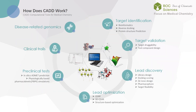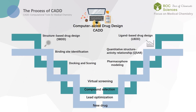So how does computer-aided drug design participate in the drug development process? This picture illustrates the entire drug development process. Starting with disease-related genomics, computer-aided drug design has been involved in target identification, target validation, lead discovery, lead optimization, and preclinical testing. We can choose two different methods, starting with a structure-based or ligand-based approach. Based on the design of the target structure of the receptor, we need to confirm the binding site, then perform molecular docking and scoring, and then enter a series of molecular screening, identification, and optimization processes until the drug molecule is obtained.